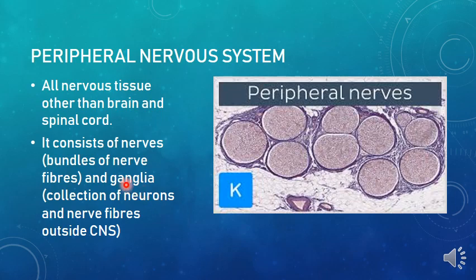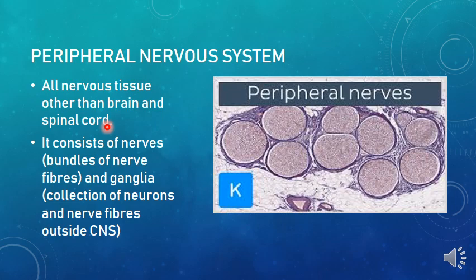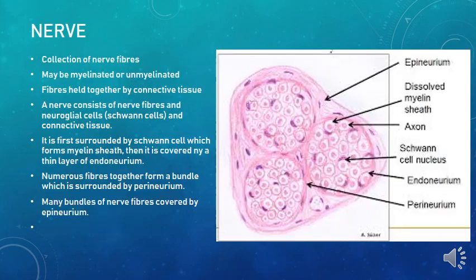The other component of the peripheral nervous system is the ganglia. There is the dorsal root ganglion of the spinal nerve, also called the spinal ganglion, and the autonomic ganglion present within the sympathetic chain. A ganglion is a collection of neurons and nerve fibers present outside the CNS. Within the brain and spinal cord, collections of neurons are called nuclei, whereas in the peripheral nervous system they are called ganglia.